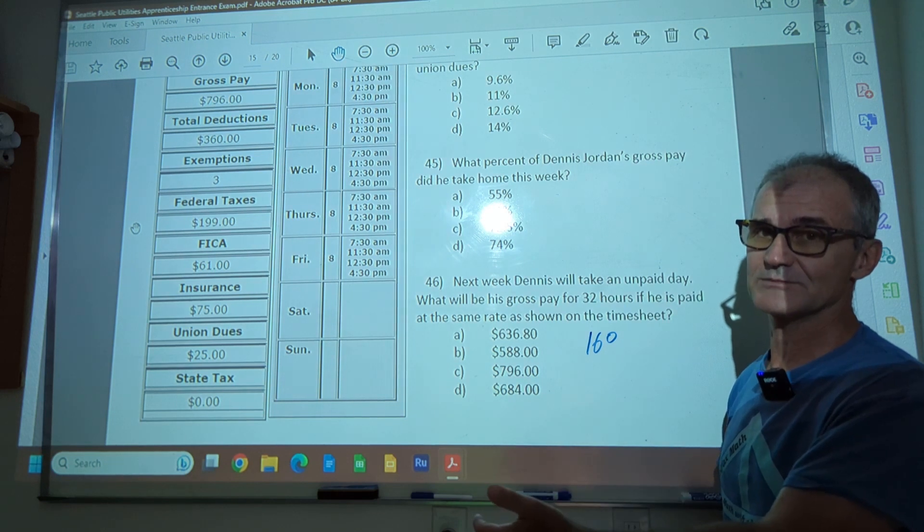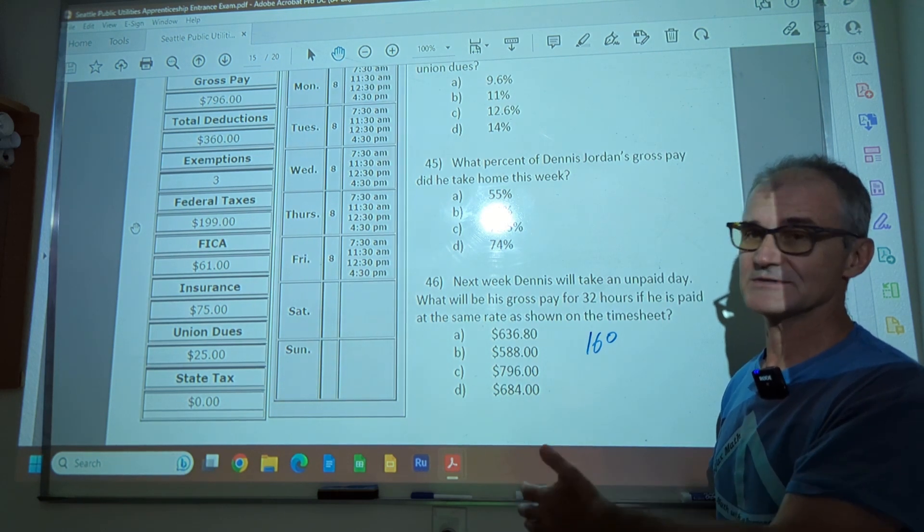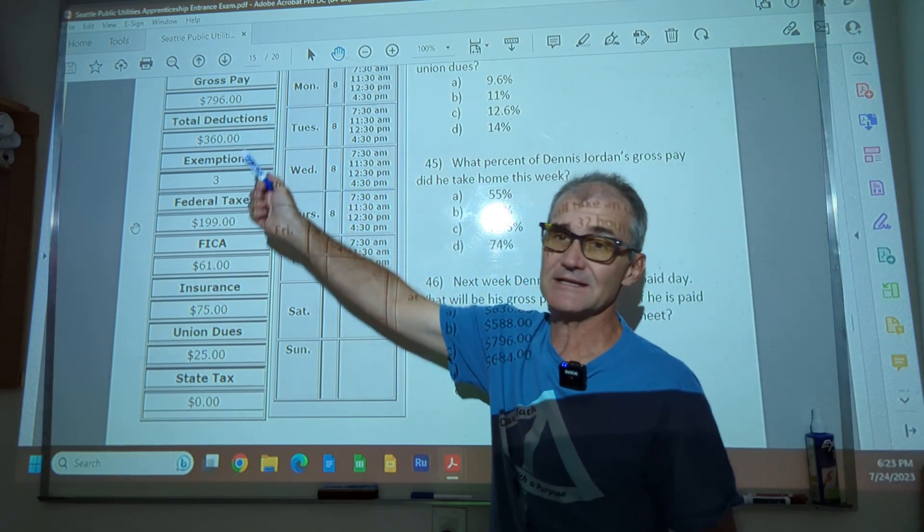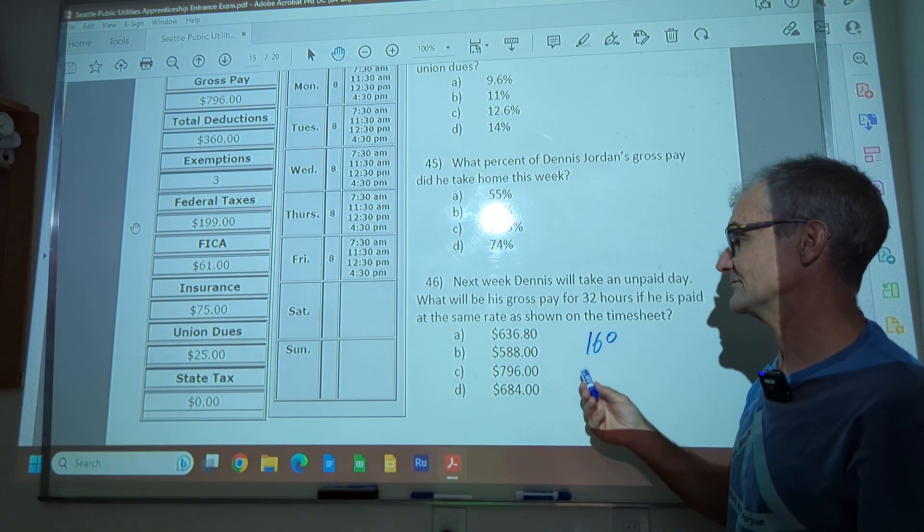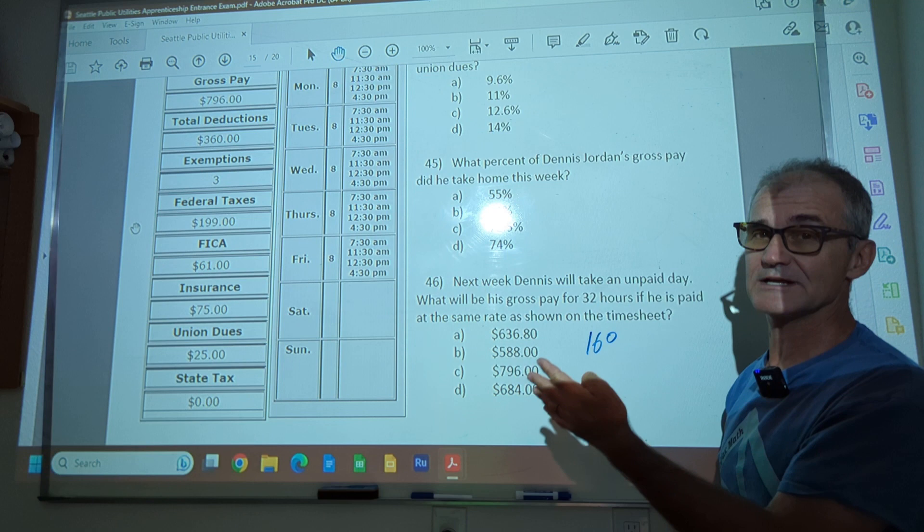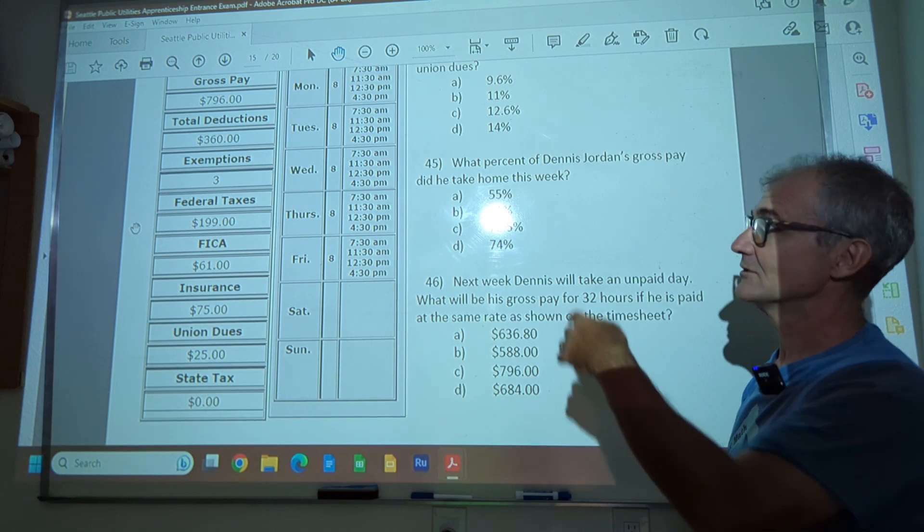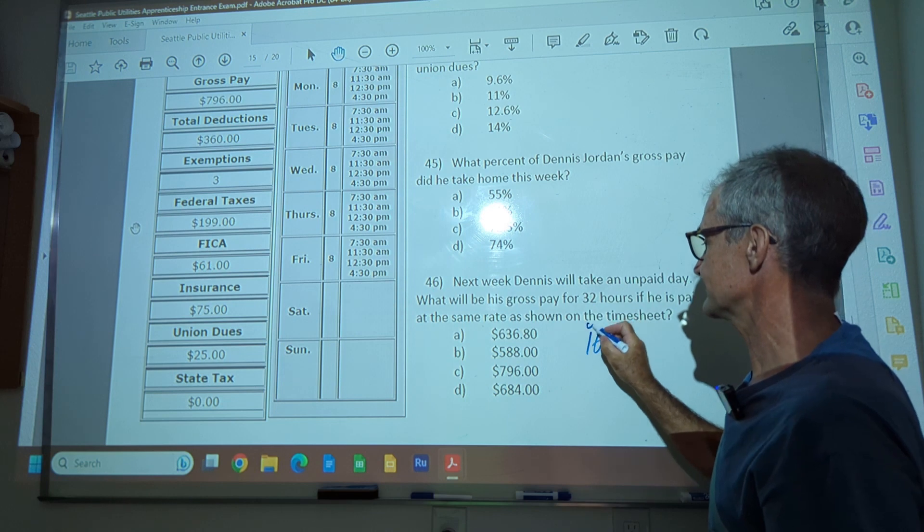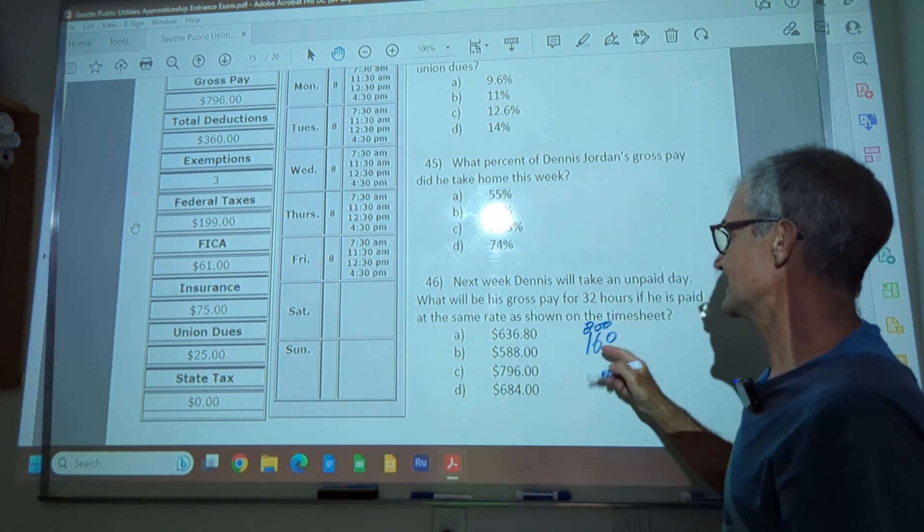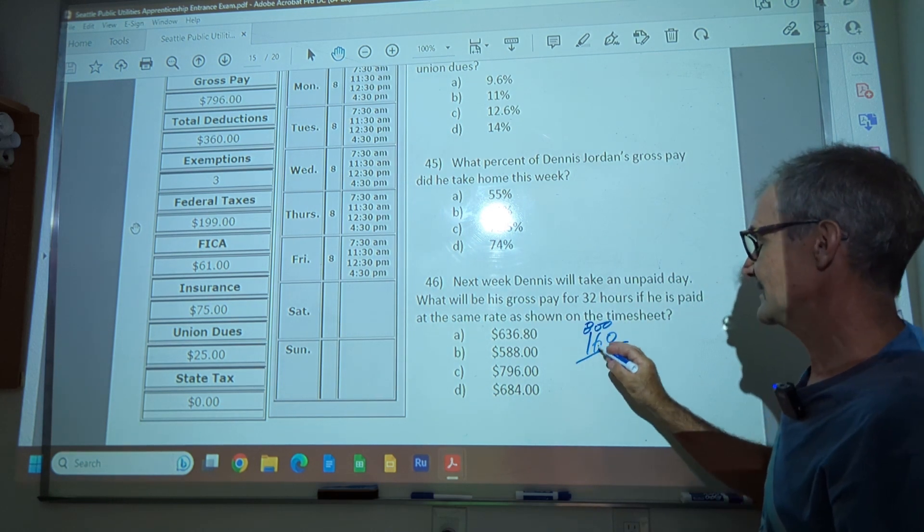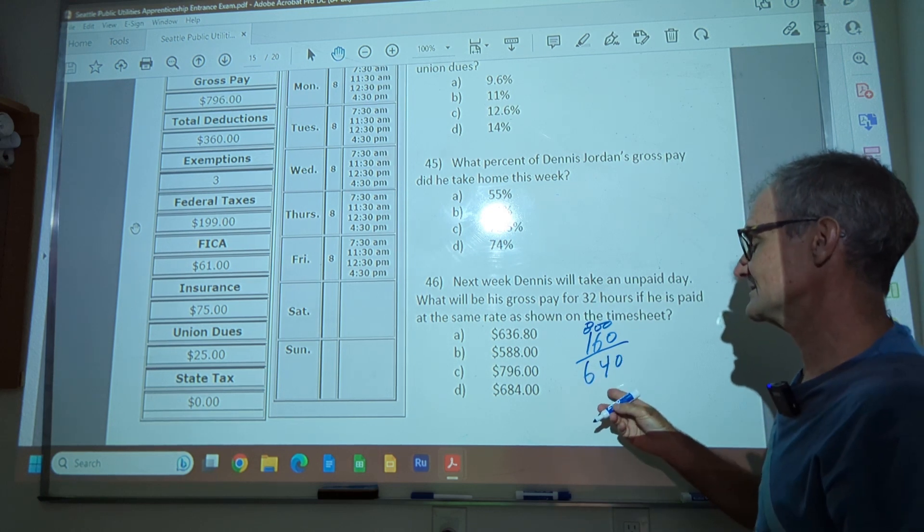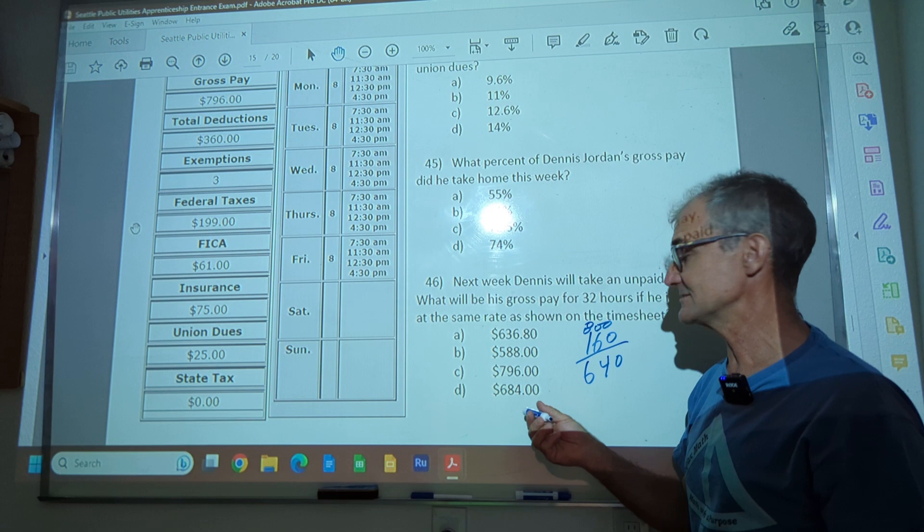His gross pay is 800 or 160 times five. So if he only works four days instead of five, we're going to do 800. Again, the gross pay 800 minus the day pay of 160. And that's about 640. Again, that's an approximation, but I'm going to look down at my answers and see which one's close.